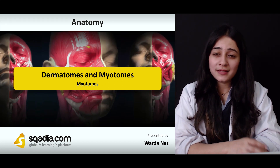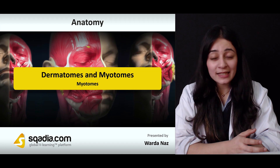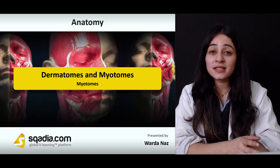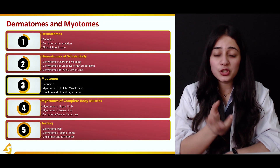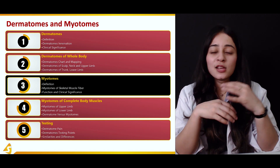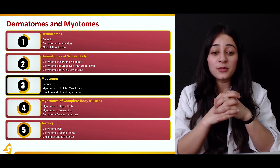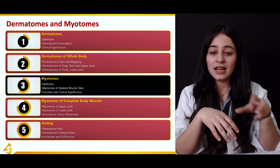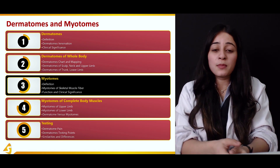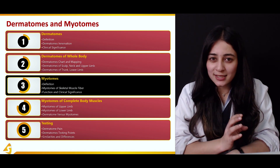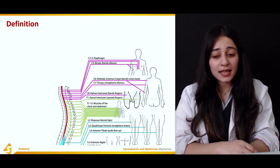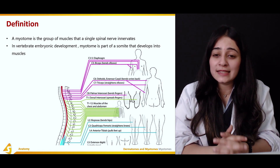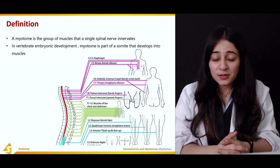A myotome is basically the group of muscles that a single nerve supplies. Multiple nerves supply different muscle groups at different regions of the body. We'll be starting in detail about myotomes — their definition, mapping, and chart — just as we did for dermatomes. The definition: a myotome is a group of muscles that a single spinal nerve innervates.